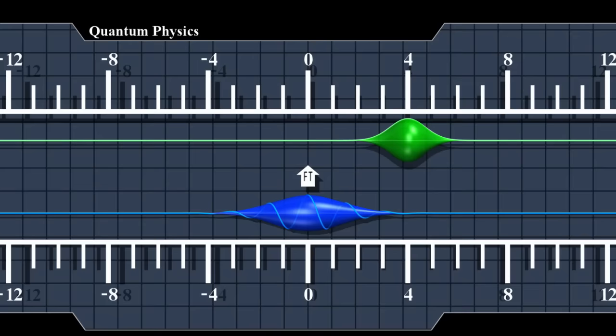This new function gives us information about the particle's velocity, in the same way the original wave function gave us information about the particle's position. To be more accurate, it gives us information about momentum, but we'll explain about momentum only near the end of the video. For now, it will work fine as the velocity wave function.